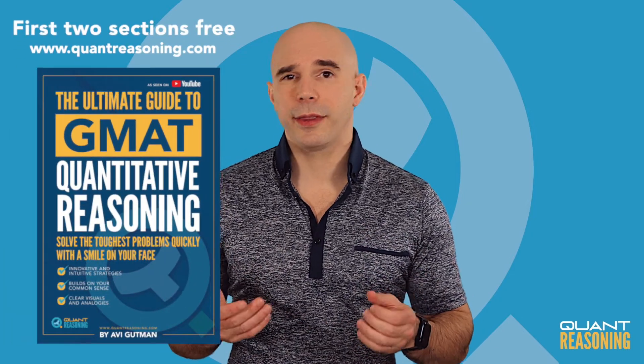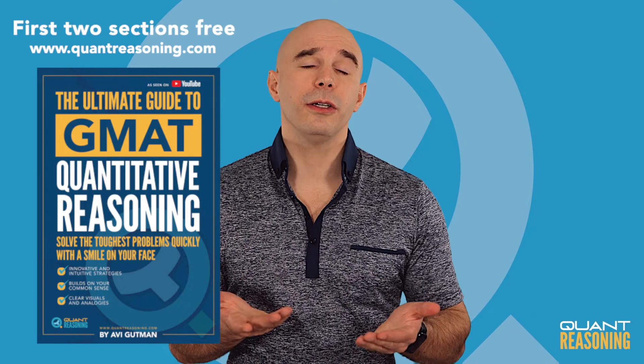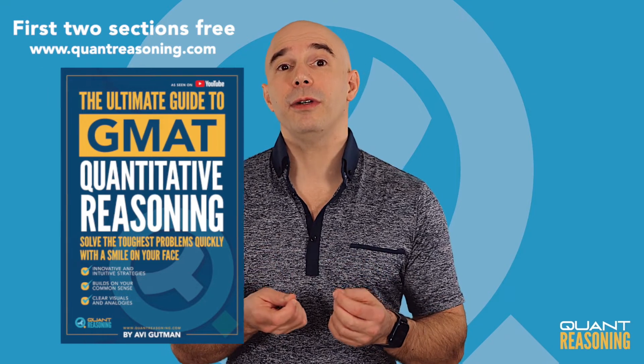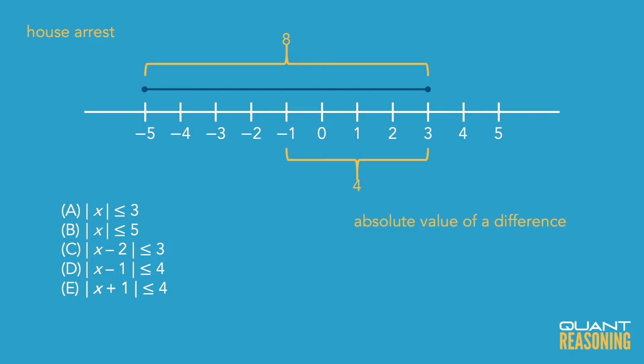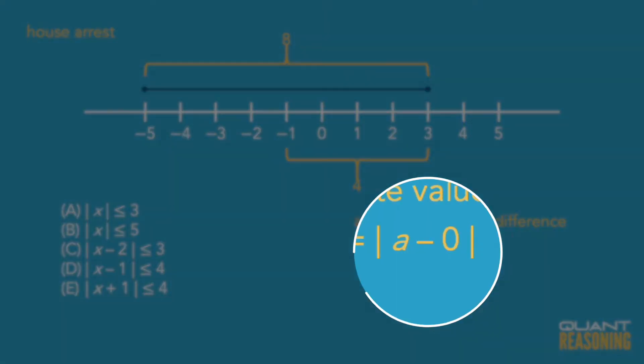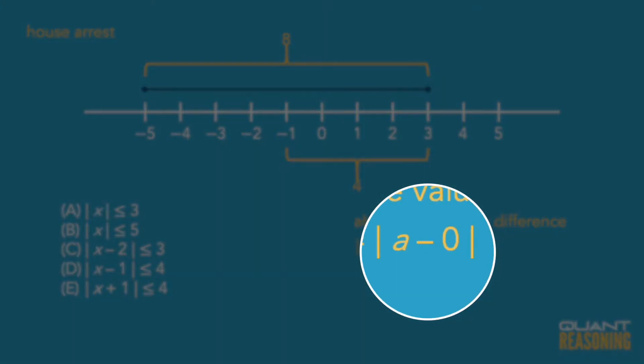Another good way to reason through this question is through the absolute value of a difference. The absolute value of an unknown can be thought of as the absolute value of that unknown minus zero. For example, the absolute value of a is the same as the absolute value of a minus zero — it's just describing how far from zero a is. So the absolute value of x minus y is describing how far from y x is.